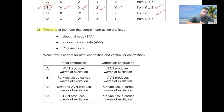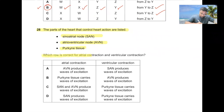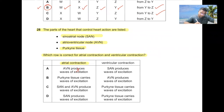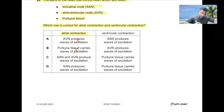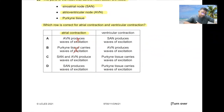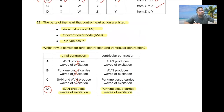Question number twenty-eight. The parts of the heart that control action are: sinoatrial node, atrioventricular node, and Purkinje tissue. AVN does not produce the initial wave of excitation — SAN does. For atrial contraction, SAN produces the wave. For ventricular contraction, Purkinje tissue carries the wave of excitation. D is the correct answer.